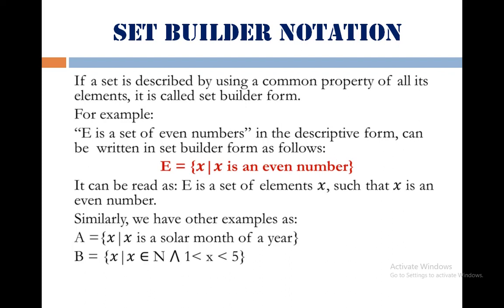Now the same set in set builder form can be written as E equals x such that x is an even number. It can be read as E is a set of elements x such that x is an even number. Similarly we have some other examples as E equals set of elements of x such that x is a solar month of a year. B equals set of elements x such that x belongs to N and 1 is less than x is less than 5. Hope you are understanding and enjoying these different forms of writing a set.